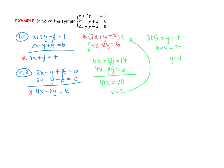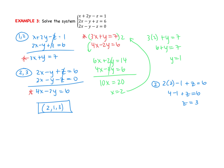We have x and y; we need z. Kenny suggests plugging back into the second equation in the original system. Any of the original equations will work. So: 2 times x subtract y add z equals 6. That's 4 subtract 1 add z equals 6, so z equals 3. The final answer, written as an ordered triple, is 2, 1, 3. This is the point where all three of those lines intersect.